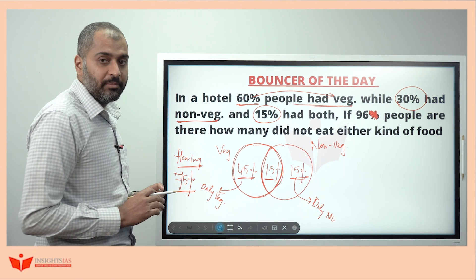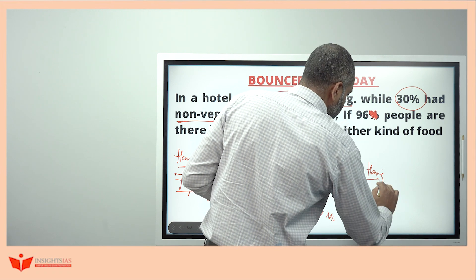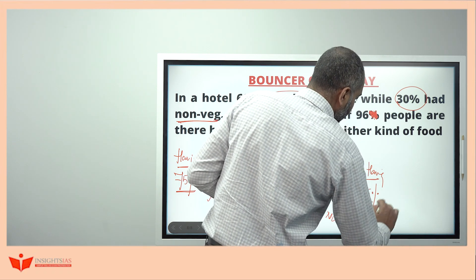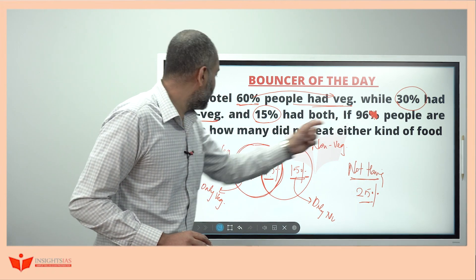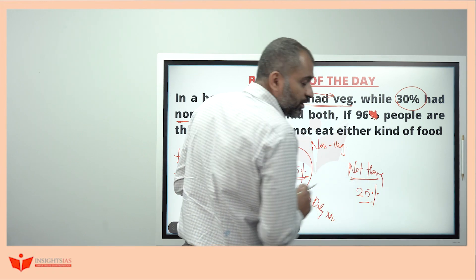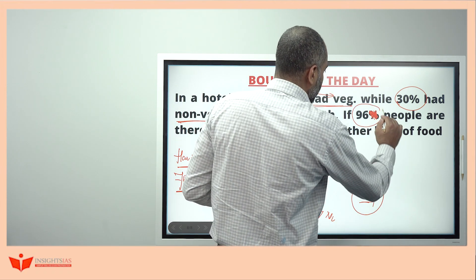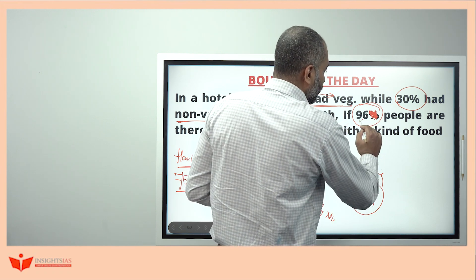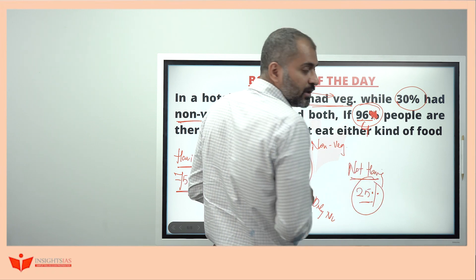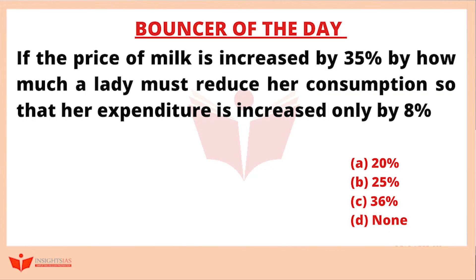If 75% of people are having something, the people not having anything is 25%. With 96 people total, how many did not eat either kind of food? 25% is 1 by 4. Divide 96 into 4 parts and take 1 part: that is 24 people. This is the bouncer question answer. Try to solve today's question and put your answer in the comments. Thank you, see you in the next video.